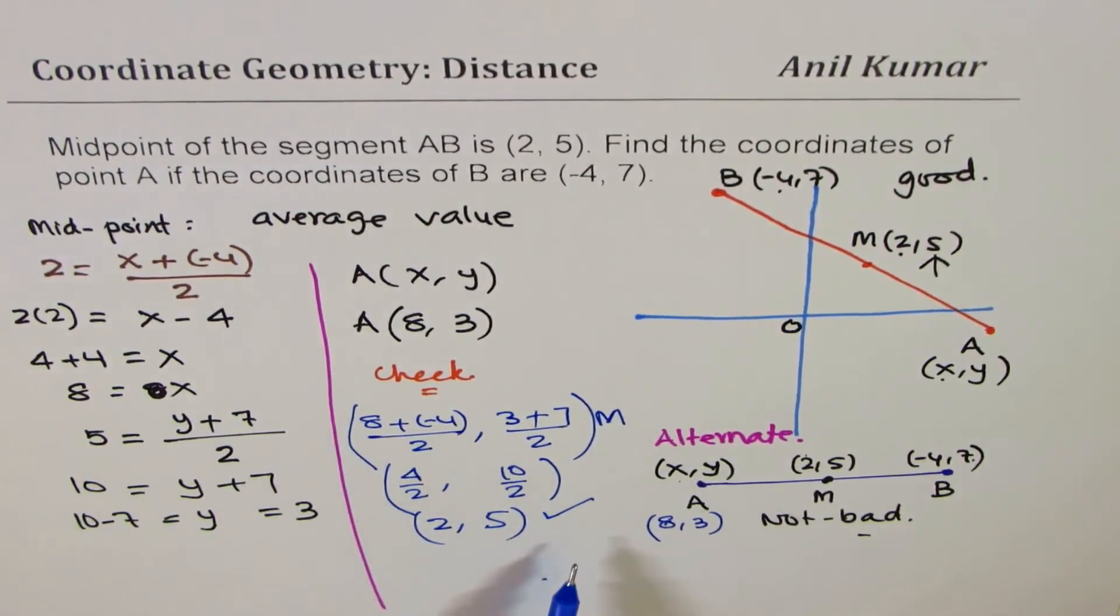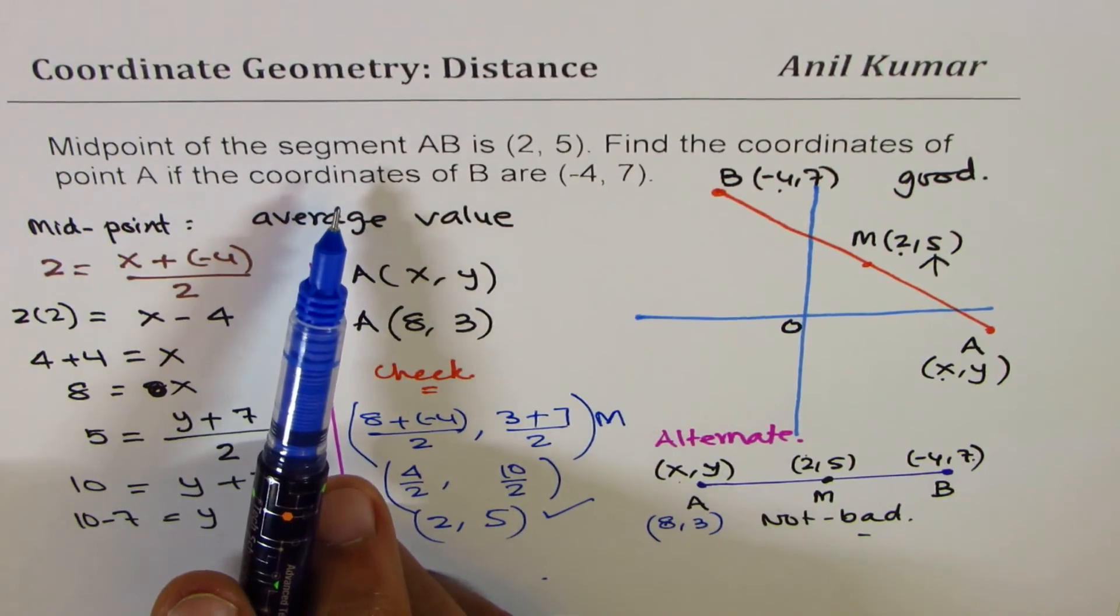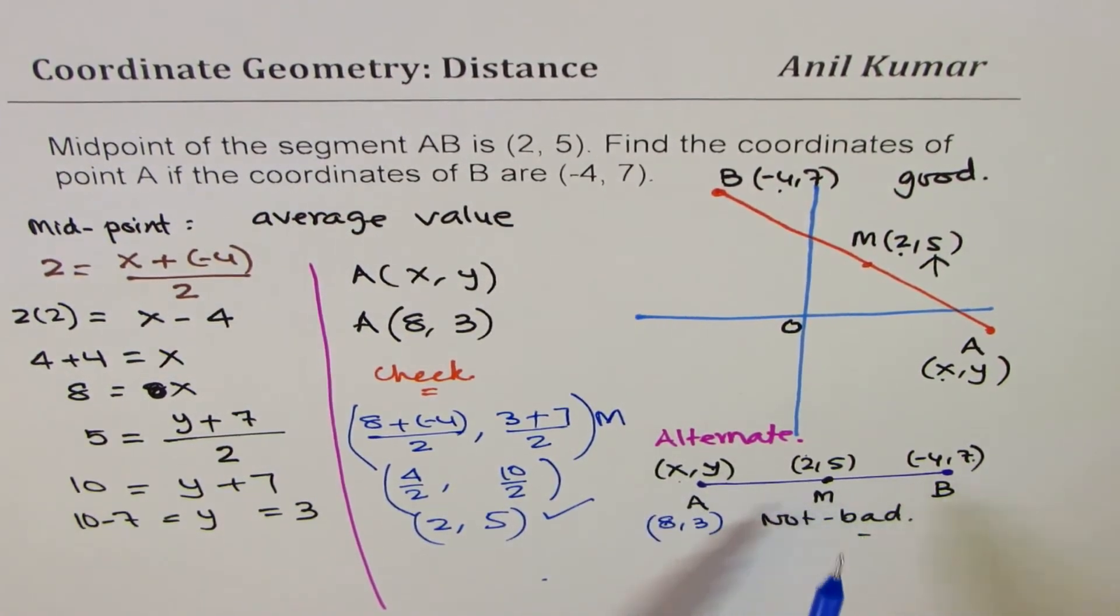Now with this example, you will also understand that by making a diagram which looks wrong, but it is absolutely correct for such examples, where we are not required to sketch. This sketch is only to help us solve the equation. So it doesn't matter, even if you write (2, 5) on left side of (-4, 7). We are just making a horizontal line. So it works for any coordinates. So I hope that helps.